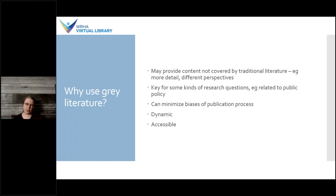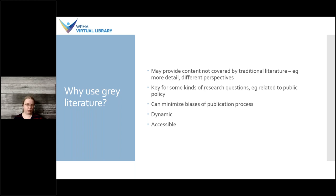So why would you want to search for grey literature? Not everything is in the traditional literature — some topics aren't covered at all, and some may have more detail or different perspectives provided in the grey literature. If someone's written a thesis on a particular topic, that may provide more detail than an equivalent journal article. You might also get perspectives from the practitioner or from the patient that are not covered by the traditional literature. It's a key resource for research questions related to public policy, and you might look to the grey literature to find examples of similar policies at other organizations.